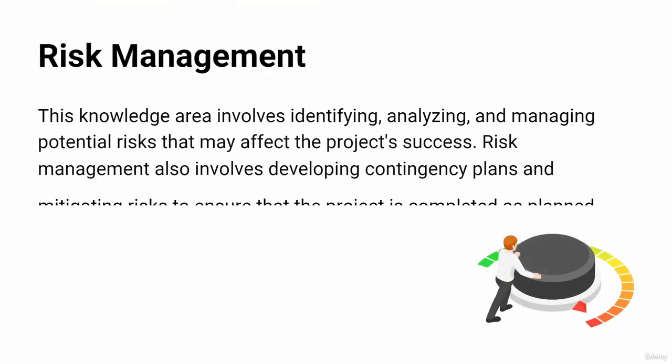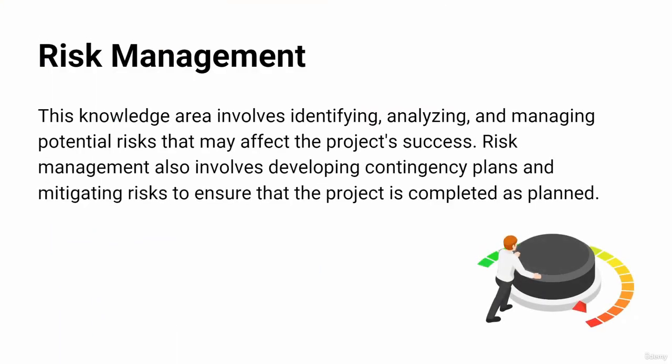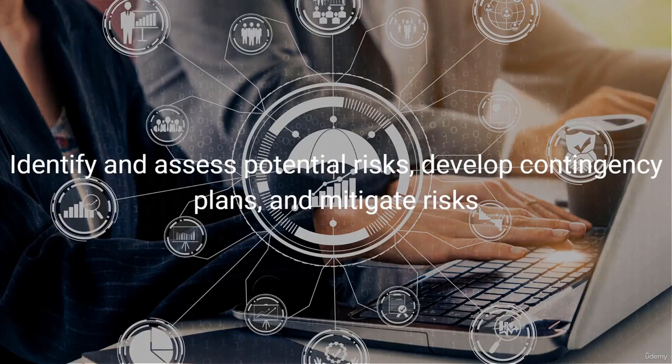The sixth knowledge area is Risk Management. This knowledge area involves identifying, analyzing, and managing potential risks that may affect the project's success. Risk management also involves developing contingency plans and mitigating risks to ensure that the project is completed as planned. An example is when a project manager is working on a software development project, using Risk Management to identify and assess potential risks.